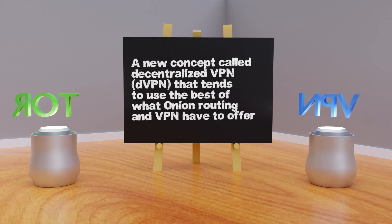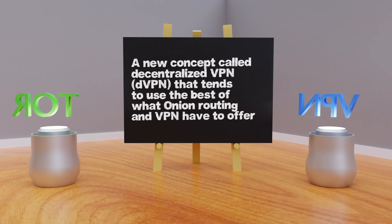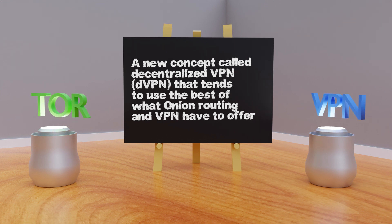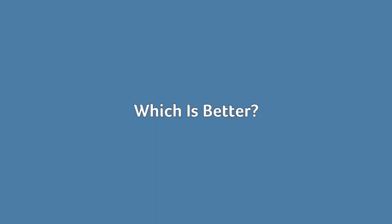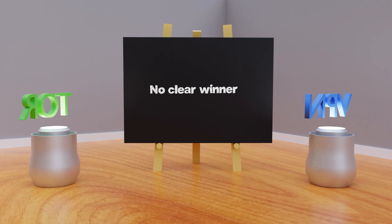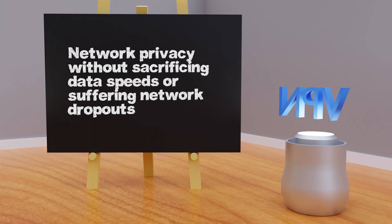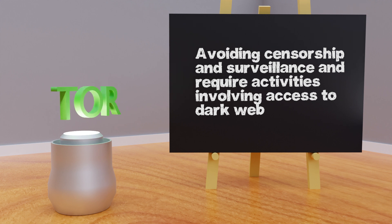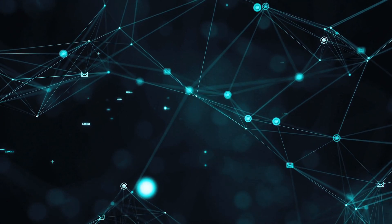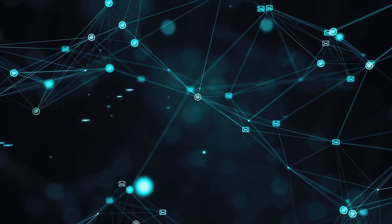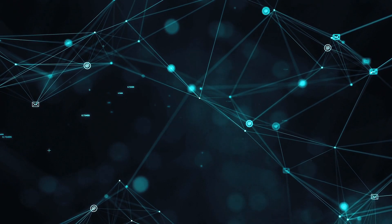However, there are workarounds. A new concept called decentralized VPN, or DVPN, uses the best of onion routing and VPN. Instead of a central VPN provider, you have peer-to-peer nodes which provide the same access but with greater anonymity, just like Tor. Which is better? There is no clear winner — both have their own major uses. If you want network privacy without sacrificing speed or suffering dropouts, VPN is the preferred solution. If you care more about avoiding censorship and surveillance or need access to dark web pages, Tor is the better option. Seeing that some VPN providers now have onion routing capabilities, if you had to pick just one solution, going with a commercial VPN provider that has onion services is the way to go.